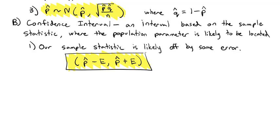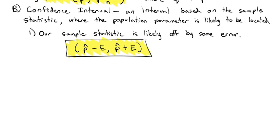How big is that error? We don't really know exactly. We have to decide on a level of confidence — how much error we're comfortable allowing. If we're OK with being wrong 5% of the time, we make a 95% confidence interval. If we're OK being wrong 10% of the time, we make a 90% confidence interval. We can never be 100% confident unless we interview everybody, so we accept a certain amount of error.